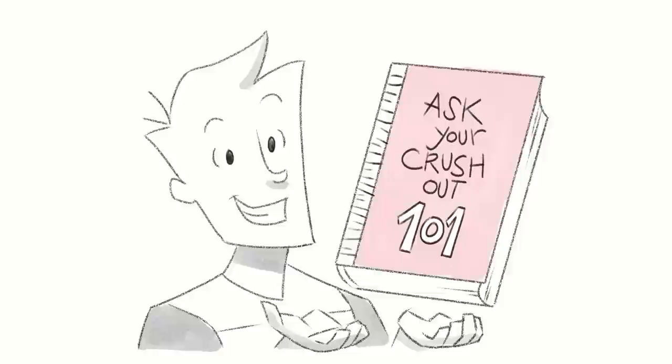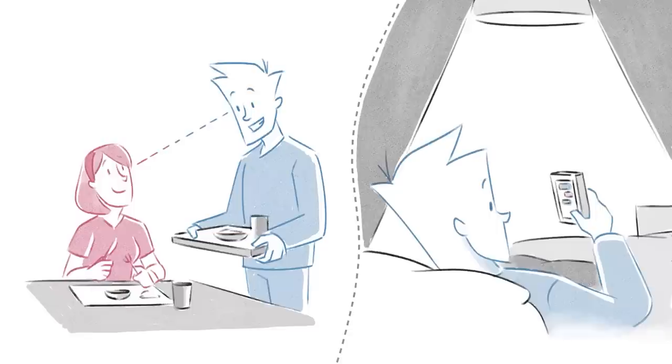Now, asking out your crush is best done with a simple three-step process. Step number one is to get their attention. You can do this by either going up to them in real life or by starting a conversation using the internet.